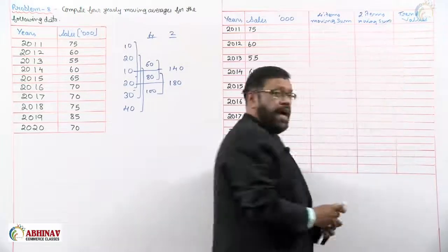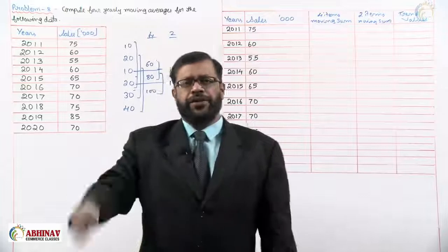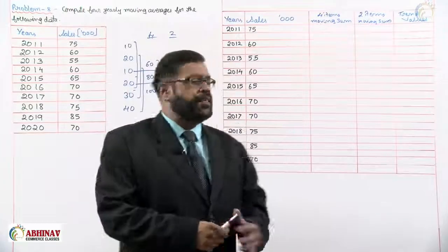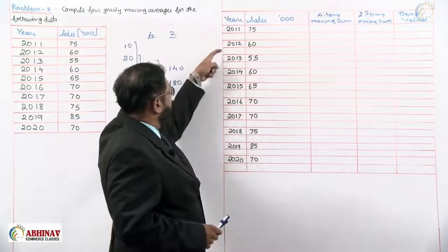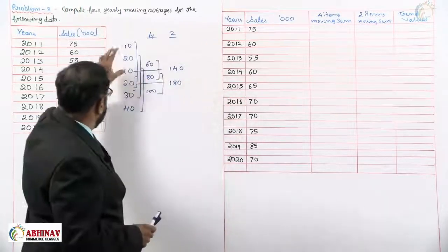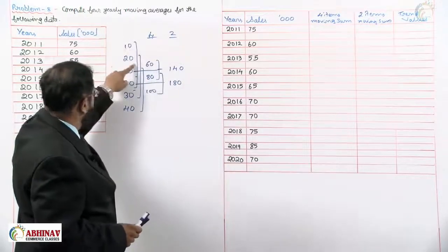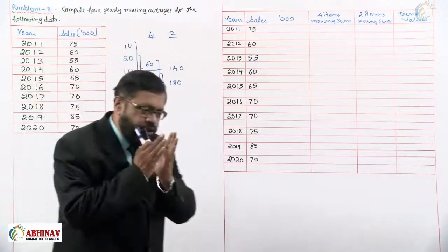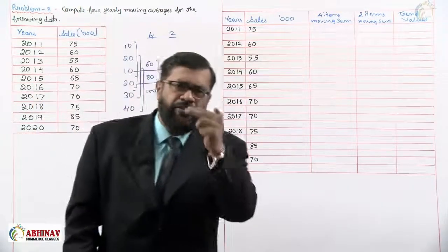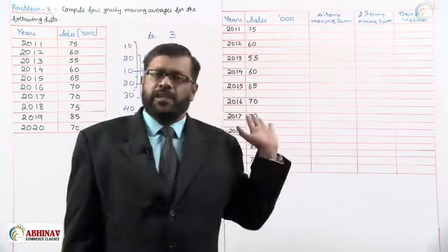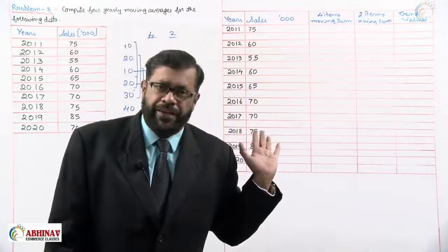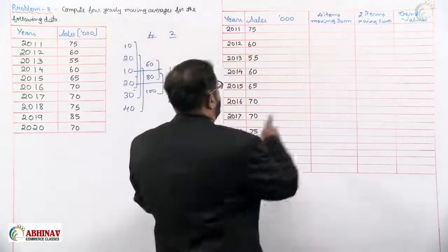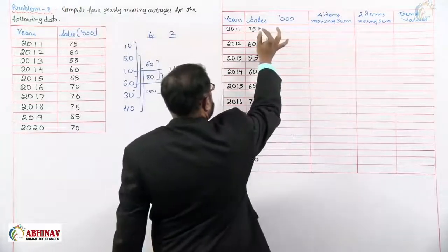We do this extra column only to get the total and average exactly for each year. For two-yearly and four-yearly moving averages, remember one basic rule: you must leave one blank line after every year, because when you write the value in the middle you need that space. Now let us start finding the four items moving sum.